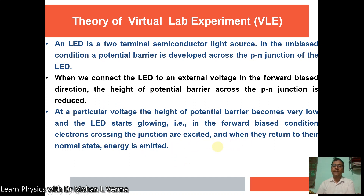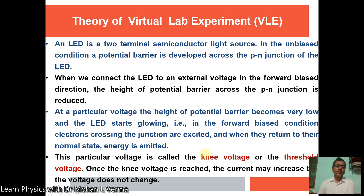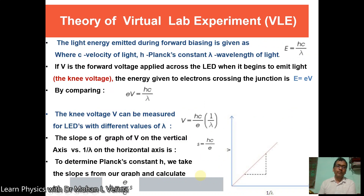In the forward bias condition, electrons crossing the junction are excited, and when they return to their normal state, energy in the form of light is emitted. This particular voltage is called the knee voltage or threshold voltage. Once the knee voltage is reached, the current may increase but the voltage does not change.